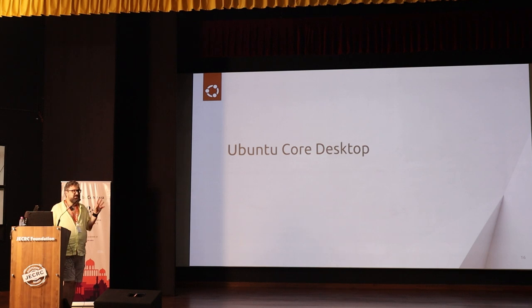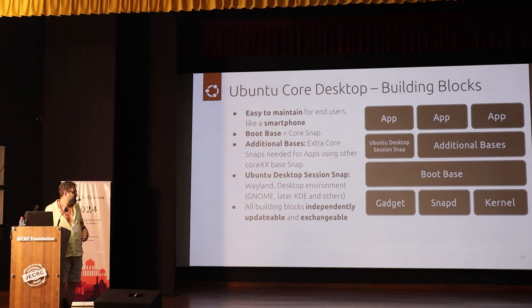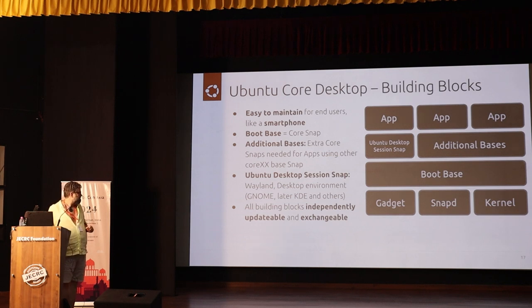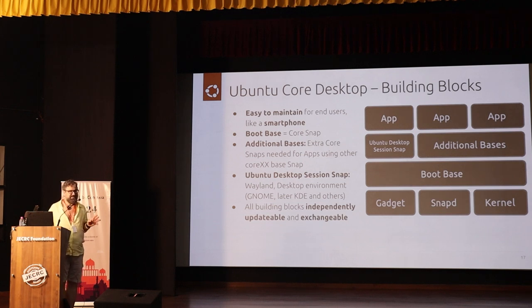Ubuntu Core was a headless operating system for headless servers and IoT. Now we add a desktop to make a desktop operating system out of it. The scheme has boot base as the core distribution, gadget as the boot system, kernel, and snapD. We add one important thing: the desktop session snap. In Ubuntu Core Desktop, which we are developing at Canonical, the desktop session snap contains Wayland and GNOME, giving an Ubuntu Core system with GNOME as the desktop.